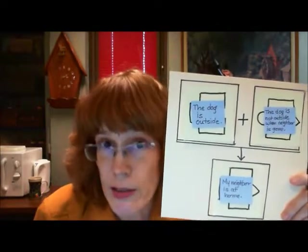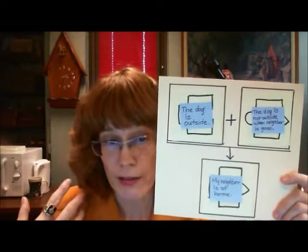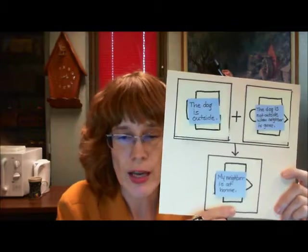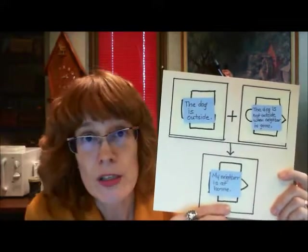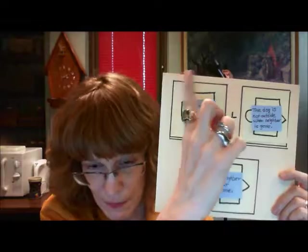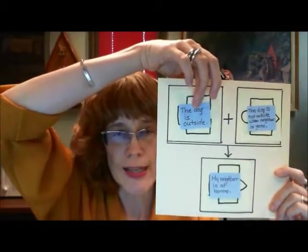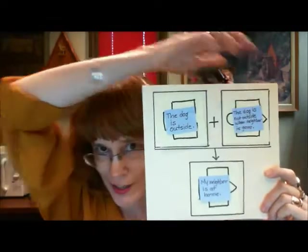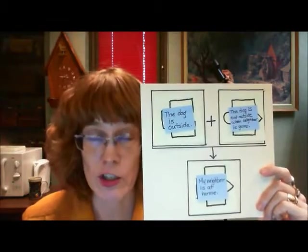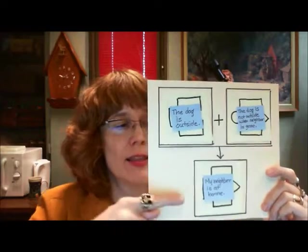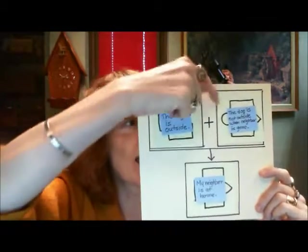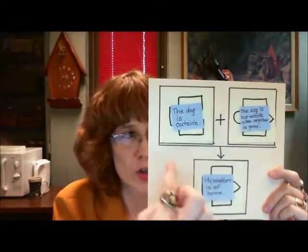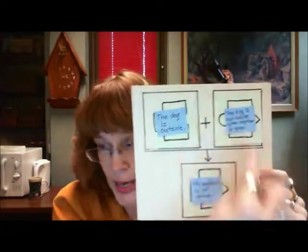We could also write this or speak this using a reason indicator going up. So, I would say this first. I would say, my neighbor is at home because the dog is outside and because the dog is not outside when the neighbors are gone. Note that expression. This, because, this, and because that. The because and because expression is usually a diagram like this.